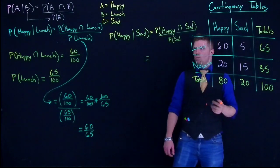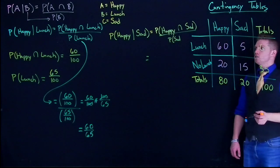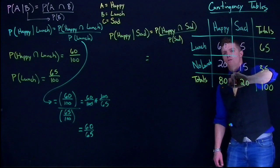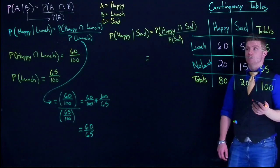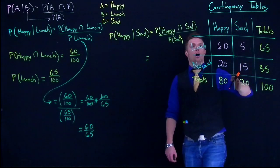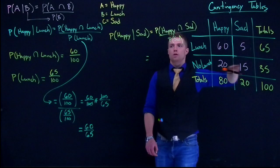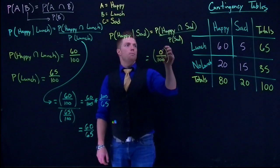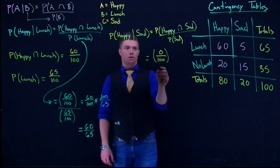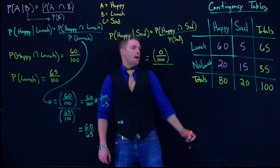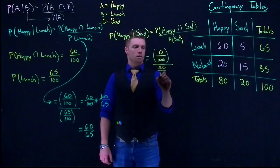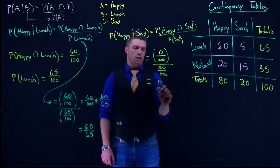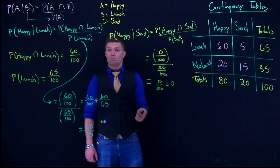Looking at our contingency table, where does happy and sad intersect? These are all the happy values, and if we circle the sads, there's no intersection between the two — because in a contingency table, columns are mutually exclusive from one another and rows are mutually exclusive from one another. So zero out of 100 are both happy and sad. We divide by the probability of being sad, which was 20 out of 100, giving us zero out of 20, which equals zero.